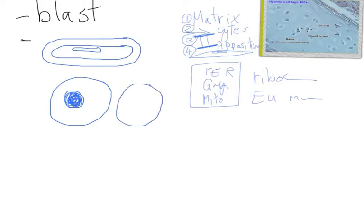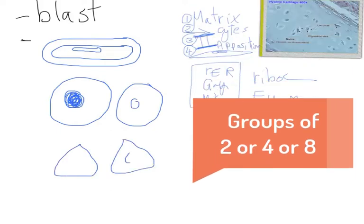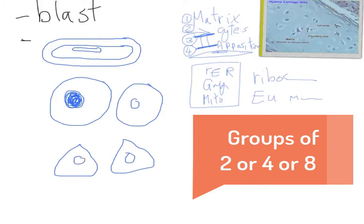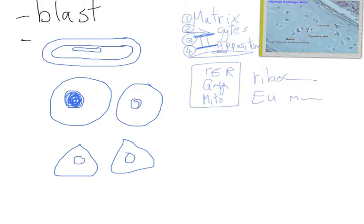Groups of 2 or groups of 4 or groups of 8 as they divide. These are the groups of 2 surrounded by a condensed matrix forming the capsule. Here, this is the capsule formed of condensed matrix, while this is the lacuna, the empty space in which the cells are present.